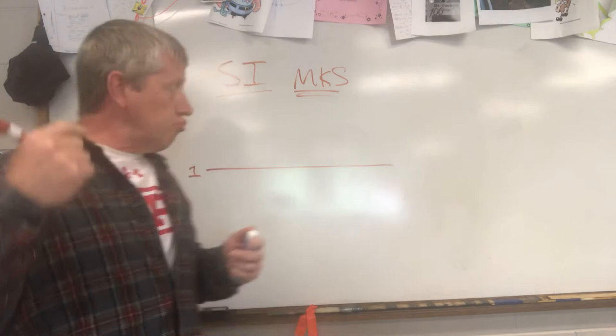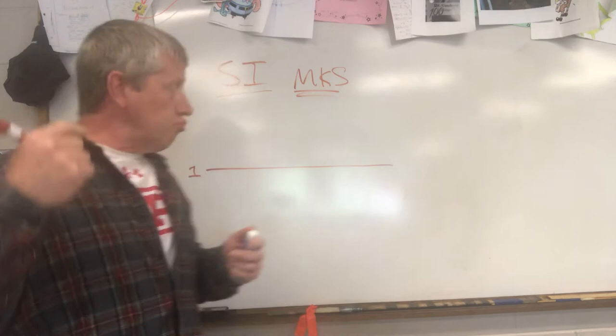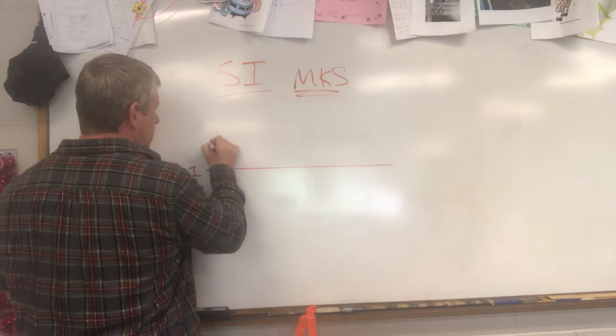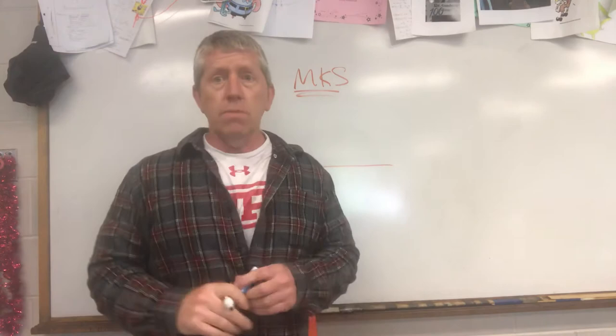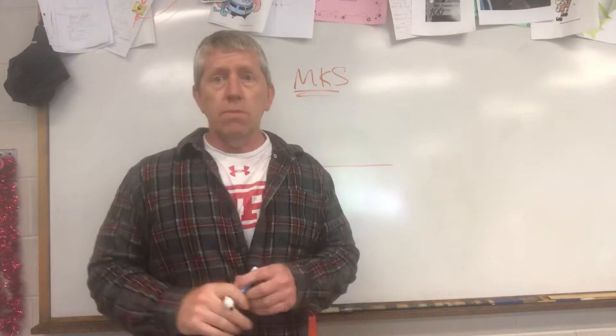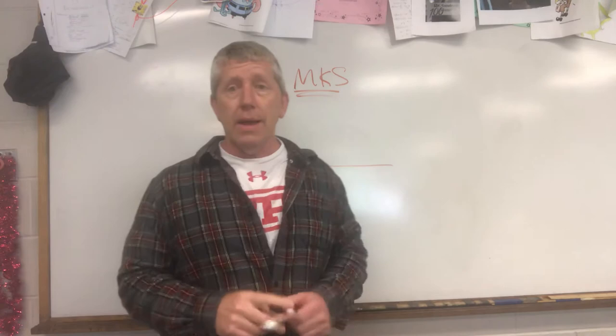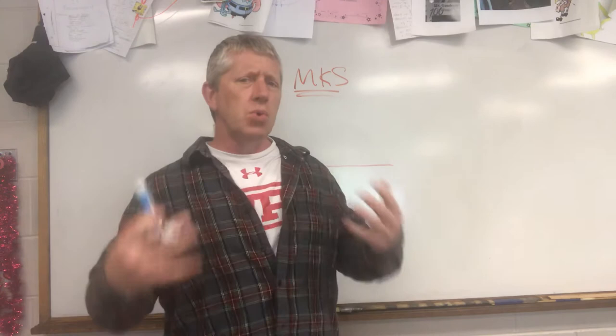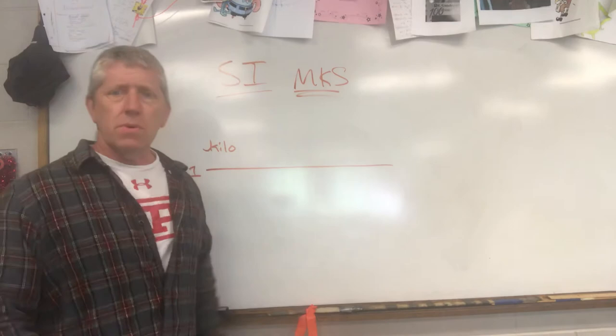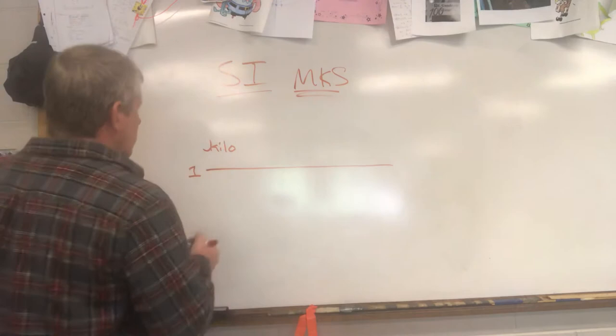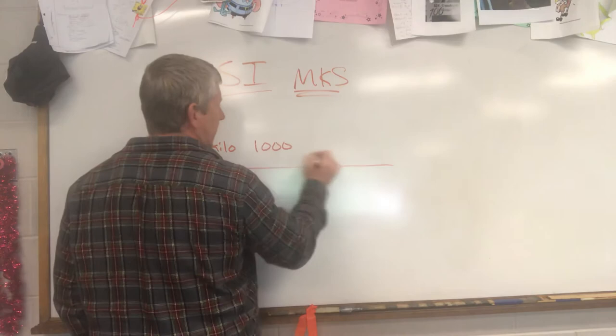Prefixes greater than one: first is kilo — little cursive k. What about deca and hecto for ten and one hundred? They just hardly get used. If something is 200 meters away, you say 200 meters; you don't need a prefix. Kilo means one thousand — also written as ten to the third power. That's an important one to know.